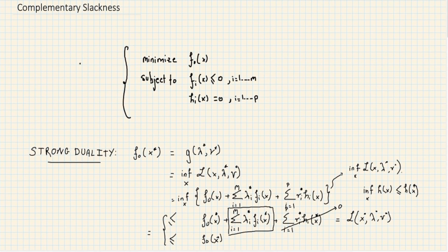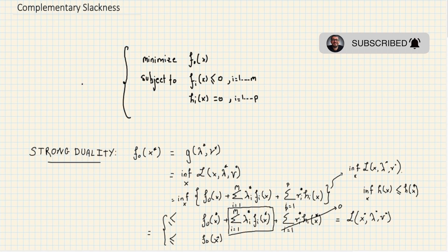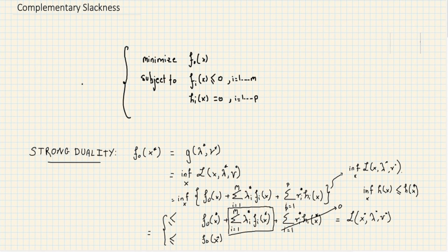Complementary slackness is one way to check for optimality. In the next lecture, we'll cover the KKT conditions and why they're very powerful. If you found this lecture beneficial, please leave a like, subscribe to the channel, and leave any questions in the comments below.